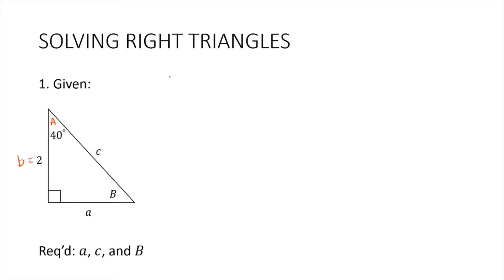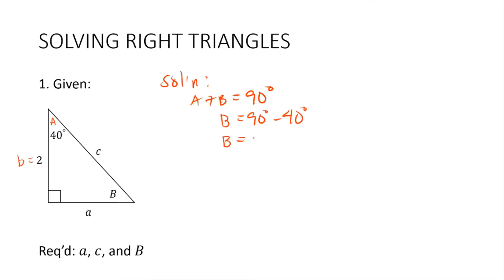We can start by solving angle B using the equation A plus B equals 90 degrees. So B is equal to 90 degrees minus A, where A is 40 degrees. Therefore, B is 50 degrees.